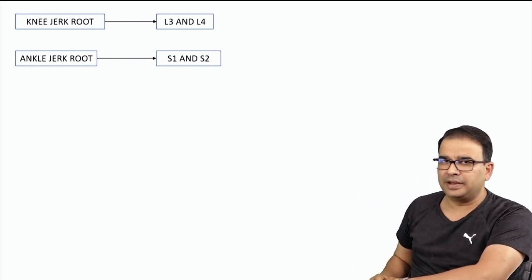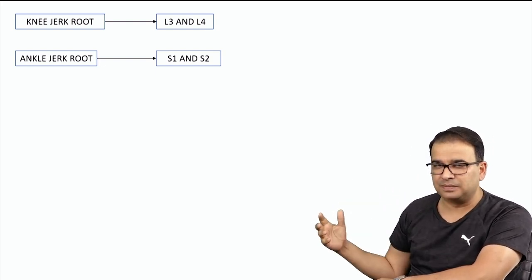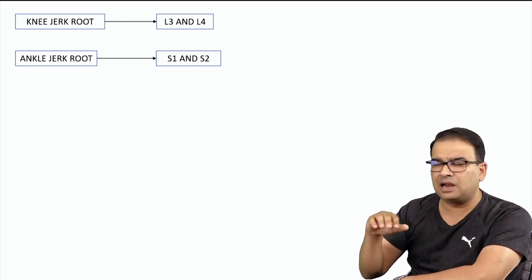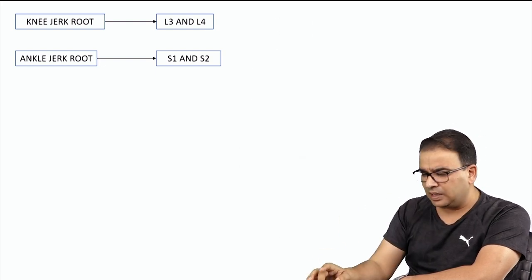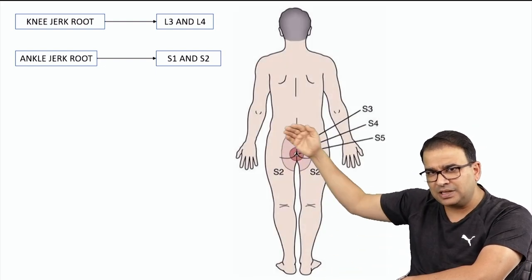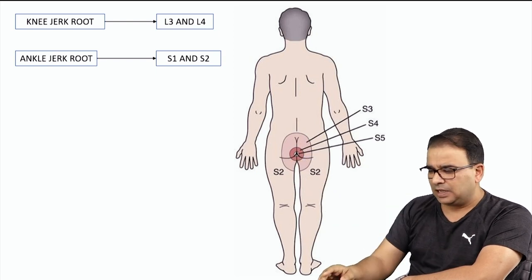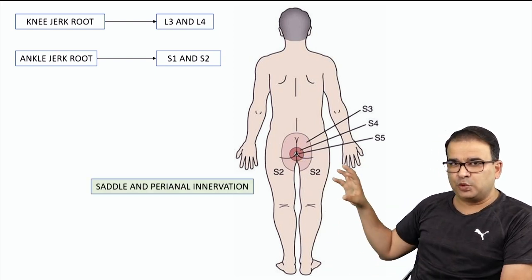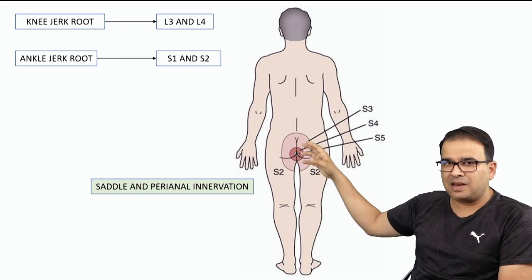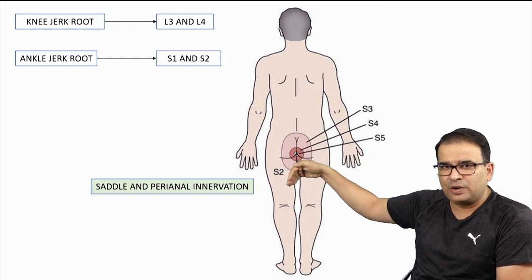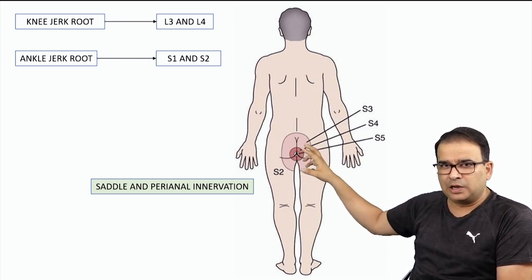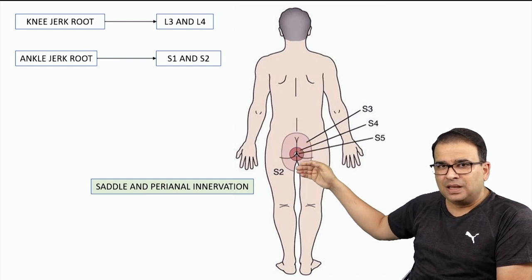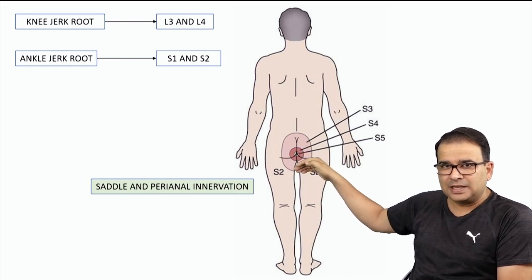Another important thing is the cutaneous innervation in the perineal region — around the anal canal and the inner aspect of the thigh. This region is called the saddle region. The saddle or perianal region includes the perianal portion and the inner aspect of the thigh as well.